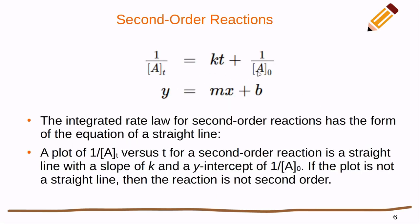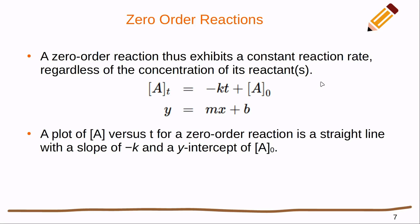For the second order reaction, it's mathematically quite a bit simpler and linearizing it is a lot easier. y is just one over the concentration at any given time, b is one over the initial concentration, x is t again, and the k value is going to be our slope.